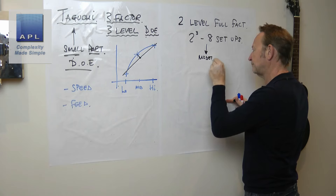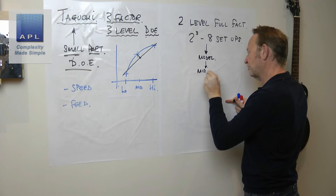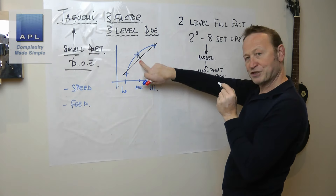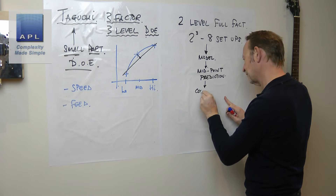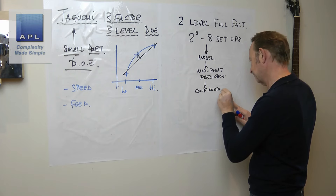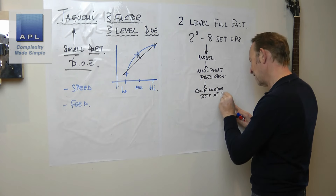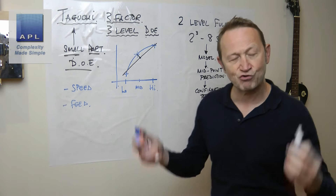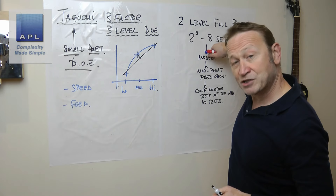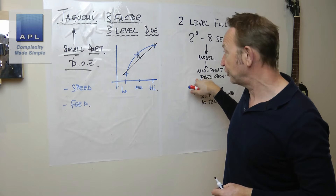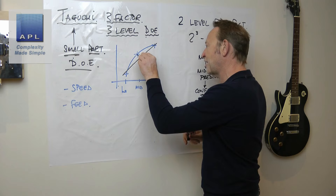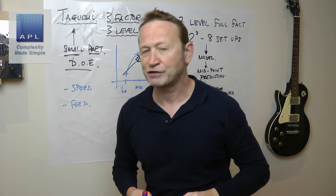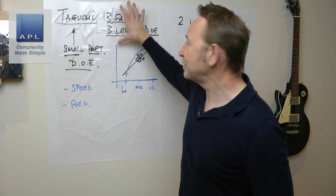What we do is: run the 2³ full factorial, create a model, and the model gives a midpoint prediction — it predicts the value at the center. You then do confirmation tests at the midpoint. I recommend you do 10 tests — 10 pieces, 10 trials — as a confirmation test. So you've done the eight setups, made the model, predicted the midpoint, and now you run 10 results. Hopefully they cluster around that predicted point. If they do, the model is confirmed.